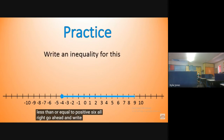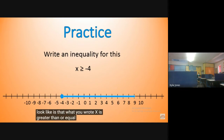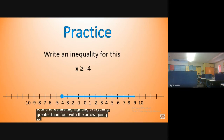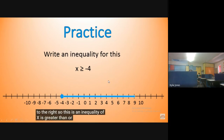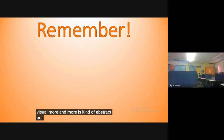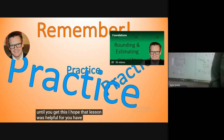Write the inequality for this one. x is greater than or equal to negative four — greater than or equal to because it's a filled-in circle at negative four, and the arrow goes to the right. This is a little bit challenging, but it's also very visual, which is kind of nice for math. When you get into higher level math, less and less is visual. The key is to practice until you get this. I hope that lesson was helpful for you. Have a wonderful day.